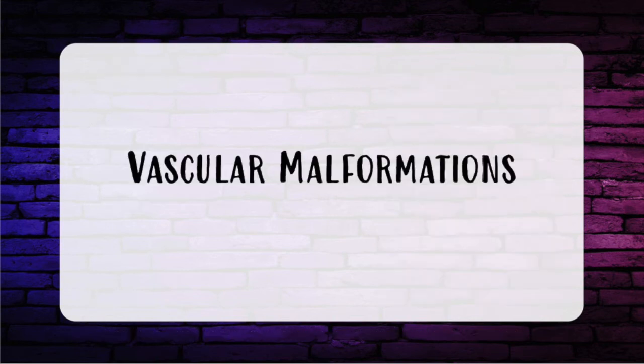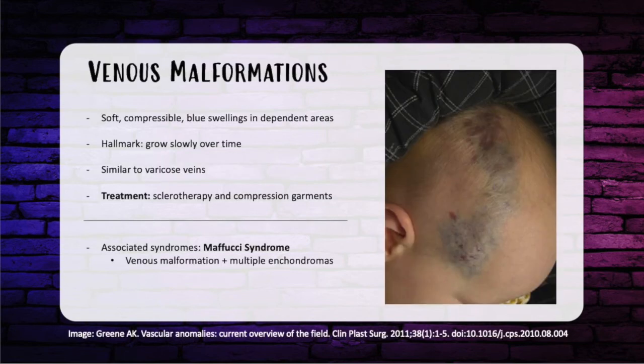Now moving on from tumors to vascular malformations. They are all present at birth — which separates them from infantile hemangioma — and they all grow proportionately with the child, so they don't regress. That separates them from congenital hemangioma, which either never changes or rapidly regresses.